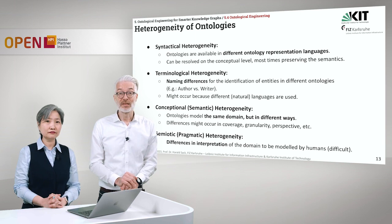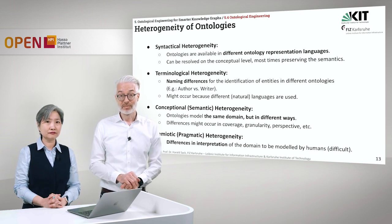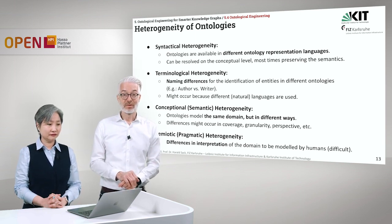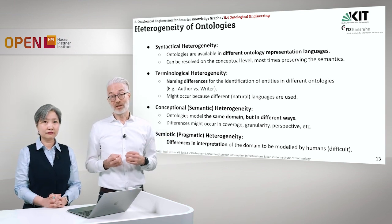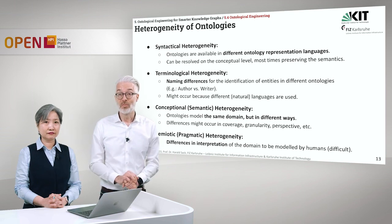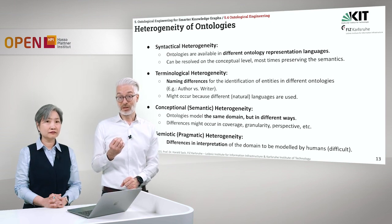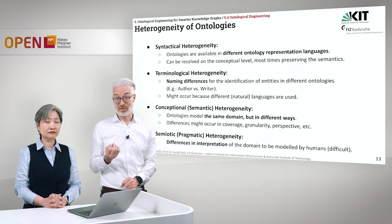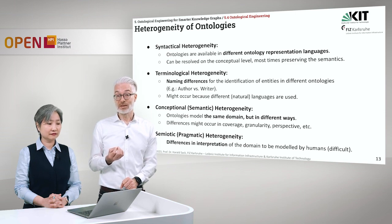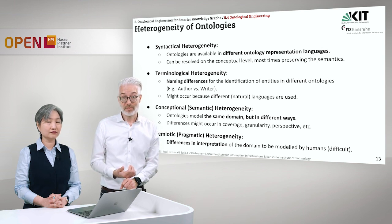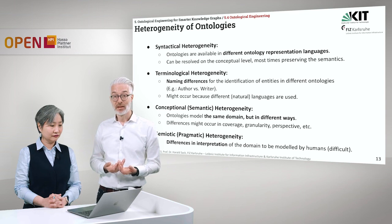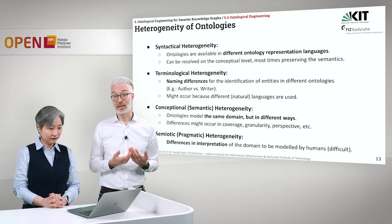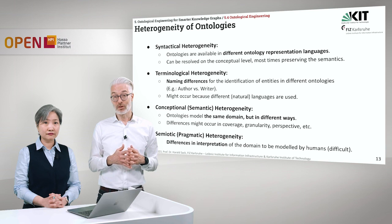Next is conceptual or semantic heterogeneity, which concerns ontology models that model the same domain but in a different way. You can definitely model the same situation, the same fact, in very different ways depending on your point of view. These differences might occur in coverage, granularity, or perspective. Sometimes it is really difficult to align ontologies that differ on the conceptual, semantic level.